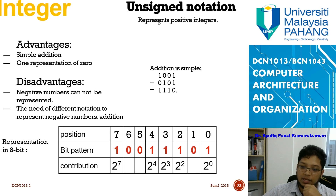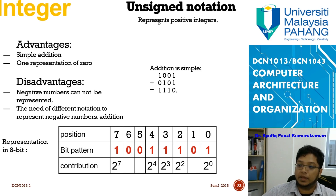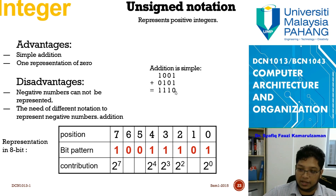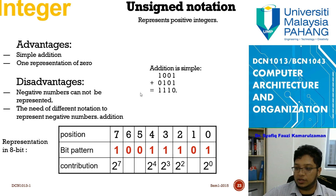There is a need for different notation to represent negative numbers, especially when you want to do subtraction and addition of negative numbers. In unsigned notation, addition is straightforward — for example, one plus one equals binary ten, so zero comes down and one carries up. One plus zero is one, zero plus one is one, one plus zero is one. The result is one one one one zero.